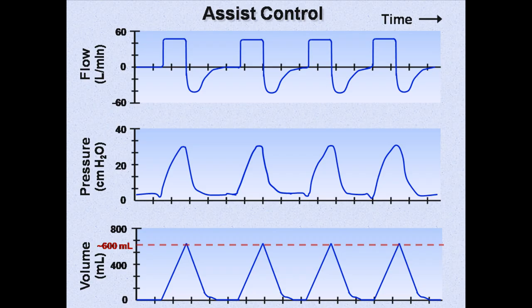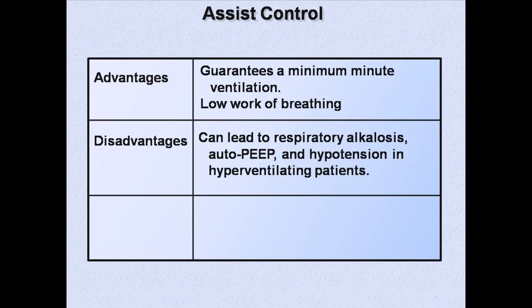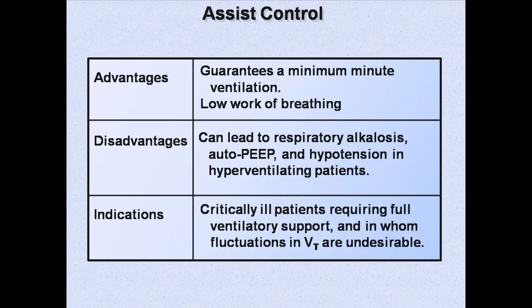You can also see that the clinician has preset the tidal volume to be about 600 milliliters. The ventilator then calculates the necessary flow rate to provide that tidal volume in the amount of time designated for each breath. Advantages of assist control are that it guarantees a minimum minute ventilation and requires low work of breathing on the part of the patient. Disadvantages are that it can lead to respiratory alkalosis, auto-PEEP, and hypotension in hyperventilating patients, because every patient-triggered breath receives a full level of support — if the rate is set to 14 and the patient suddenly breathes at 28, minute ventilation will literally double. Indications are critically ill patients requiring full vent support in whom fluctuations in tidal volume are undesirable. Assist control is overall the most commonly used vent mode in the world.